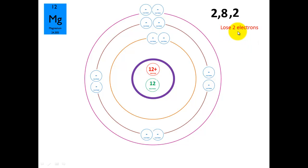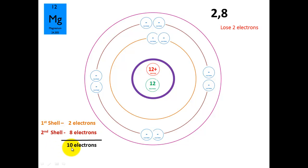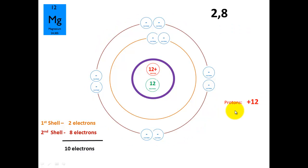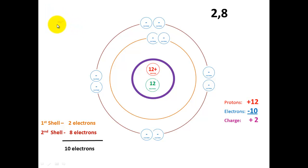So magnesium will lose 2 electrons — 1, 2 electrons gone. We now have 2 electrons in the first shell and 8 electrons in the second shell, giving a total of 10 electrons. So we've got 12 protons and 10 electrons, giving a total charge of plus 2. The magnesium atom is no longer an atom, it's now an ion — a charged atom. It is written as Mg²⁺ to indicate the charge, showing that it's lost 2 electrons.